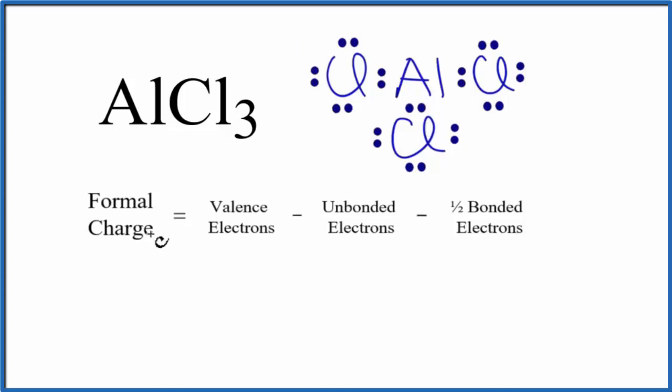So let's do the chlorine first. Chlorine, that's in group 17, sometimes called 7A on the periodic table. So chlorine on the periodic table, 7 valence electrons.